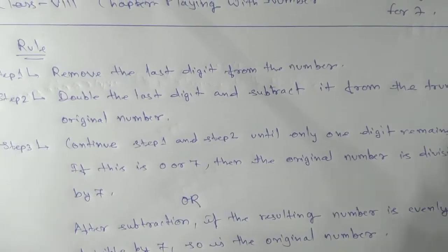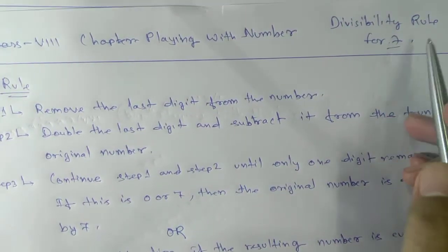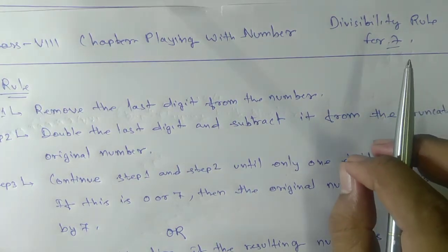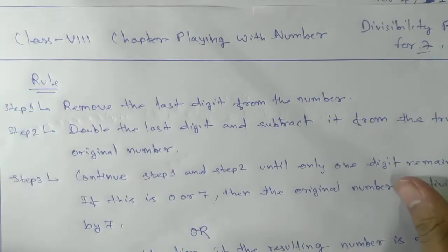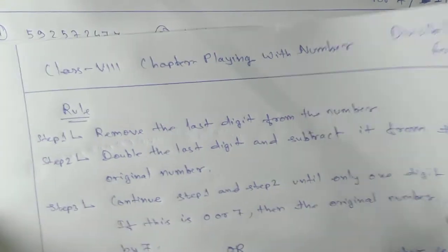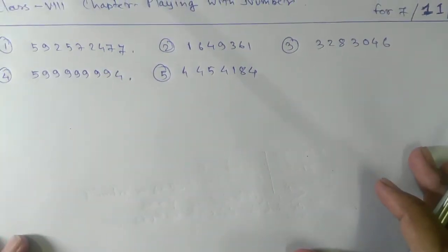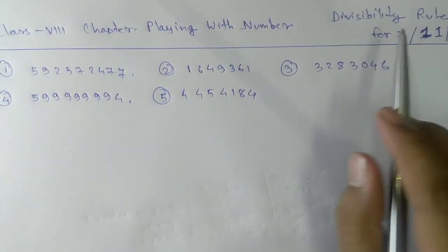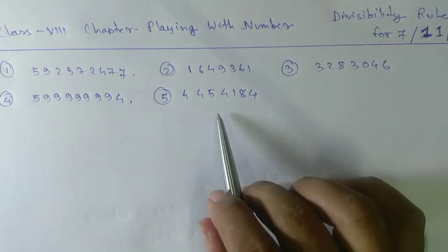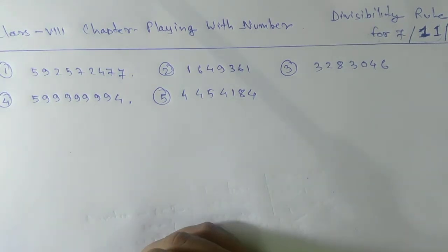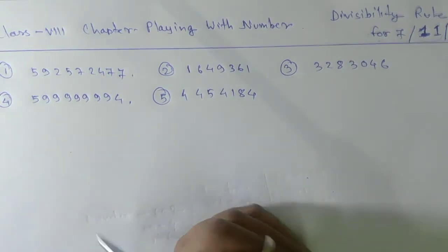And this method is not only valid for the rule of 7 — it is valid for 11 and 13 also. So by one rule, three numbers can be solved. This is more of a shortcut than the other method. Let's learn that method.